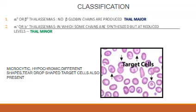When we look at the peripheral blood smears in the case of thalassemias, the typical pattern is that it is microcytic and hypochromic. The cells are of different shapes — some are teardrop shapes, and target cells are also present, as you can see in the figure.